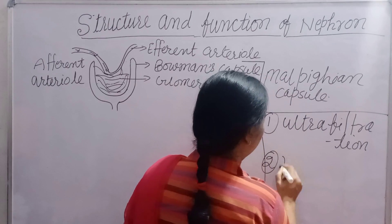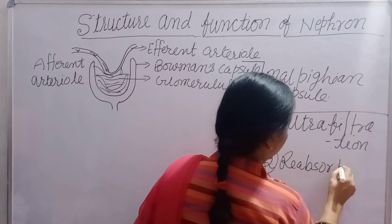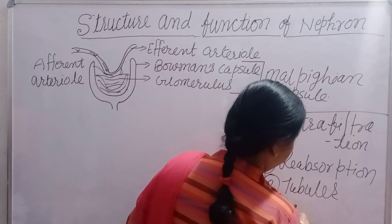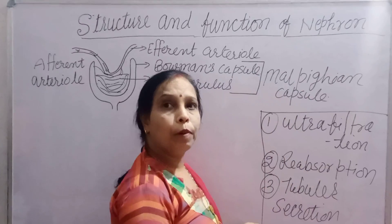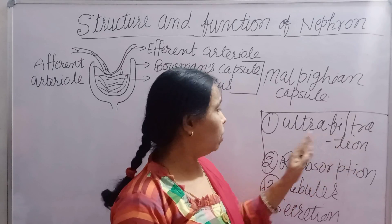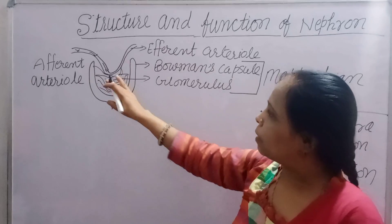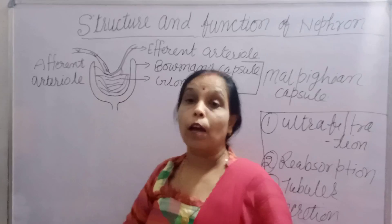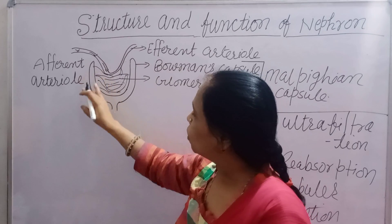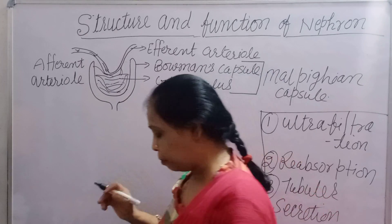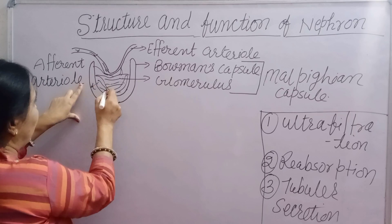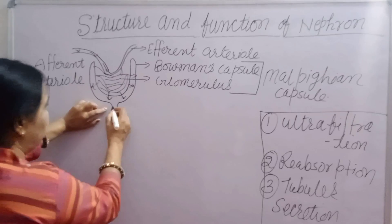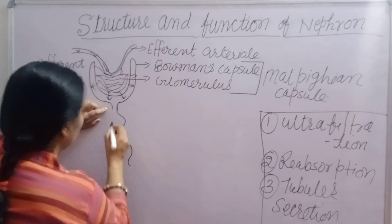The second function is reabsorption, and the third function is tubular secretion. So the three main functions are: ultra-filtration, reabsorption, and tubular secretion. In ultra-filtration at the glomerulus, all impurities along with two-thirds of the water are filtered out from the blood. The filtrate then collects in Bowman's capsule.